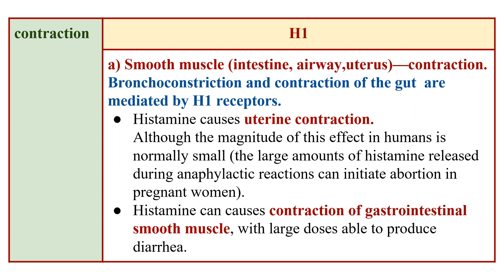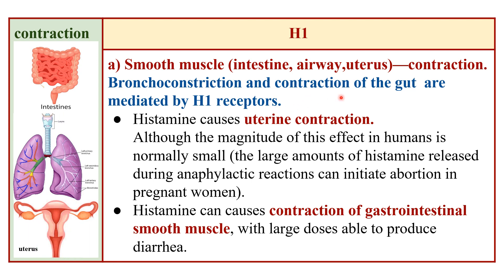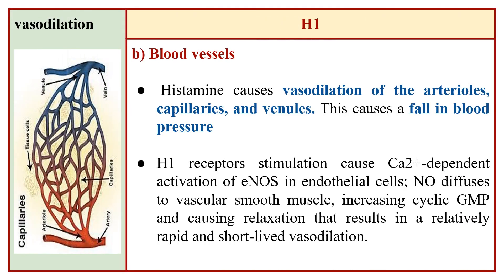Activation of H1 receptors causes contraction of smooth muscles of the intestine, airway, and uterus. Bronchoconstriction and gut contraction are mediated by H1 receptors. Histamine causes uterine contraction, though the magnitude is small in humans; however, in anaphylactic reactions where large amounts of histamine are released, it can initiate abortion in pregnant women. Histamine also causes gastrointestinal smooth muscle contraction, where only large doses produce diarrhea.